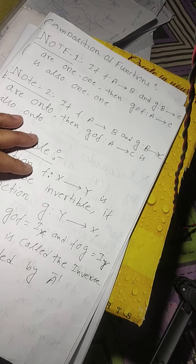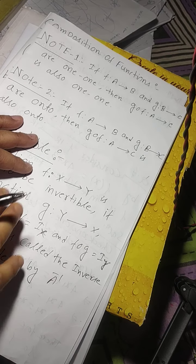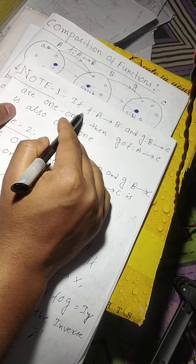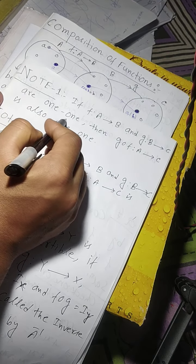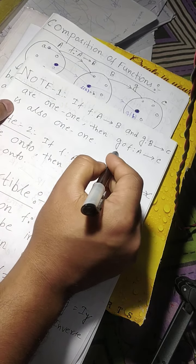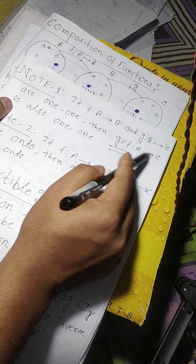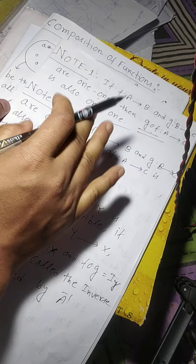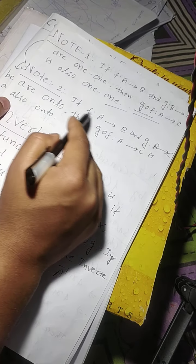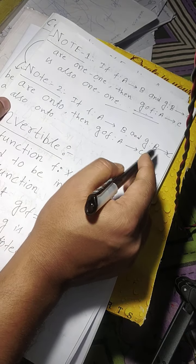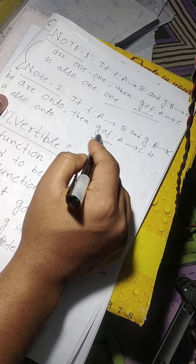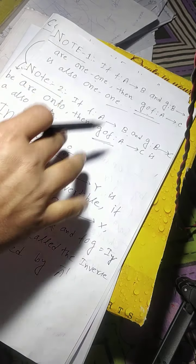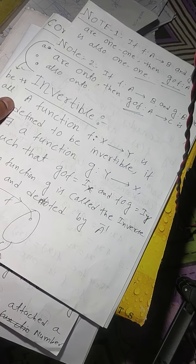Namaste students. Now I am going to discuss some properties of composition of functions. Property one: if f from A to B and g from B to C are both one-one functions, then g compose f from A to C is also one-one. Similarly, property two: if f from A to B and g from B to C are both onto, then g compose f from A to C is also onto.